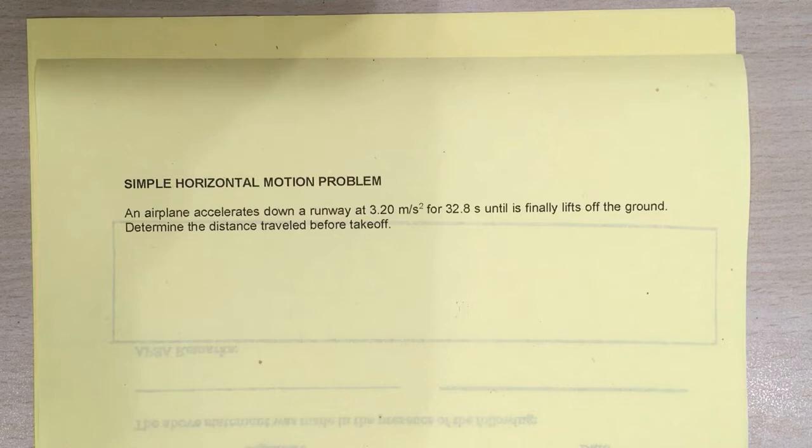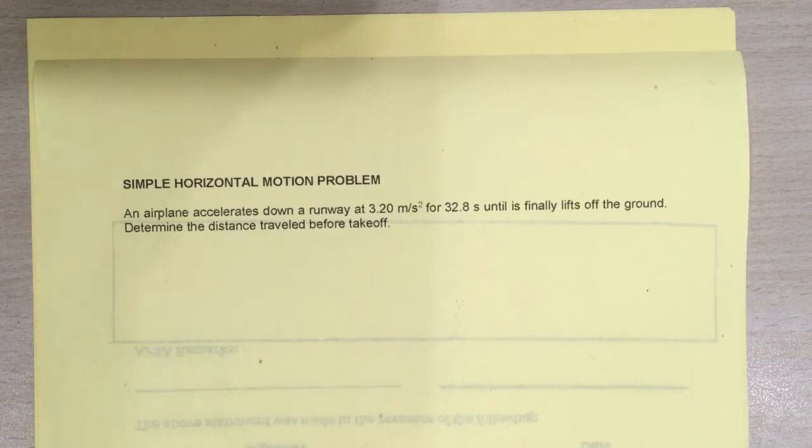Okay, so an airplane accelerates down a runway at 3.20 meters per second squared for 32.8 seconds until it finally lifts off the ground. Determine the distance traveled before takeoff.